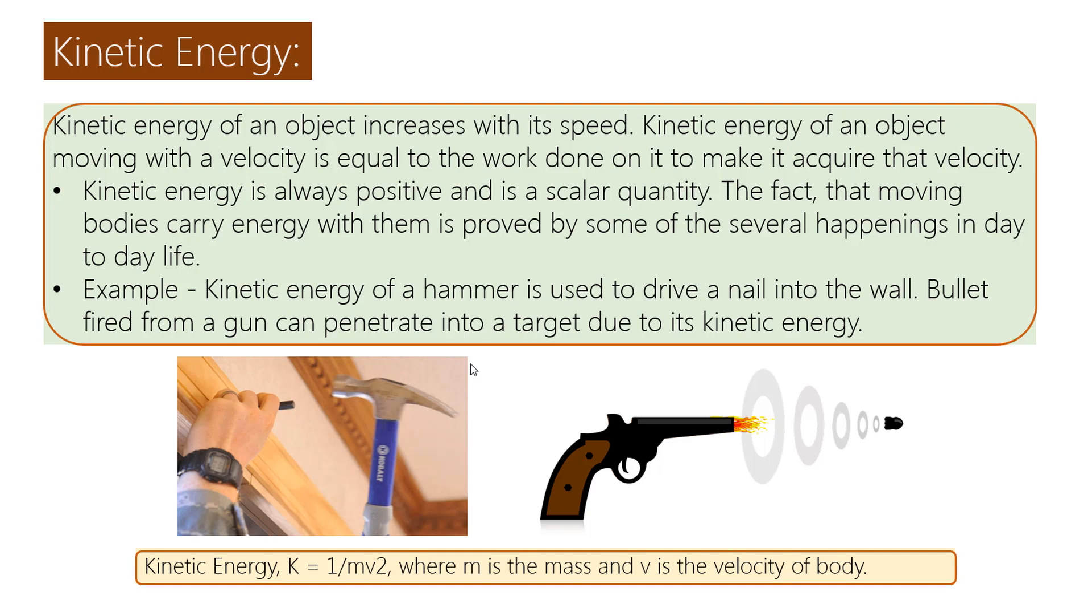Example: Kinetic energy of a hammer is used to drive a nail into the wall. A bullet fired from a gun can penetrate into a target due to its kinetic energy. Kinetic energy K equals one-half mv squared, where m is the mass and v is the velocity of the body.